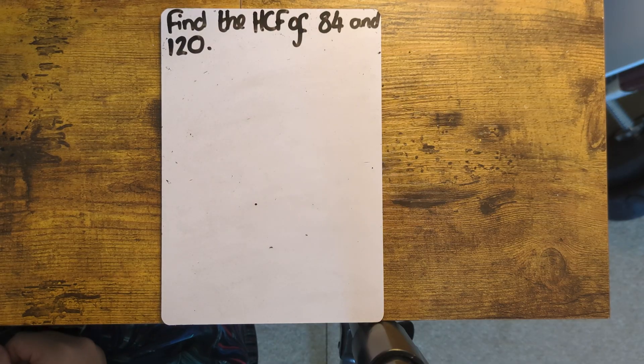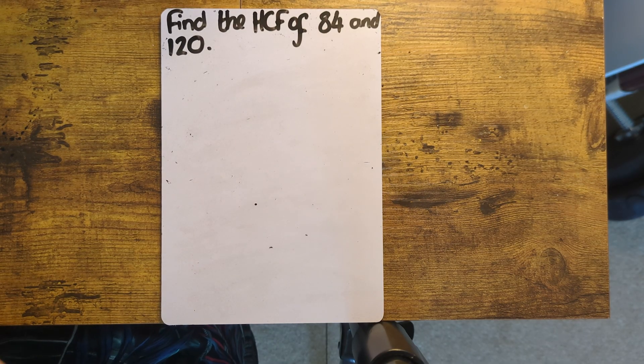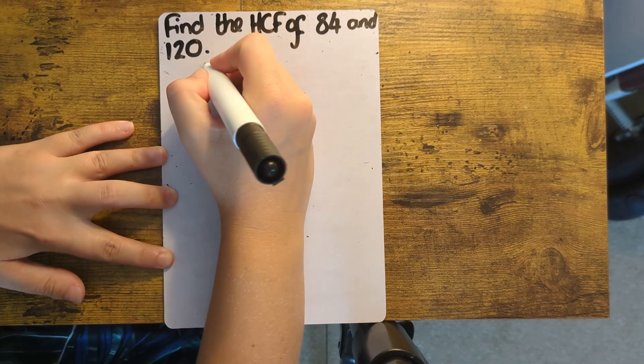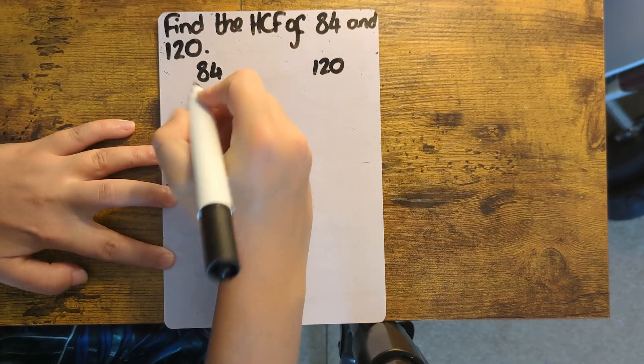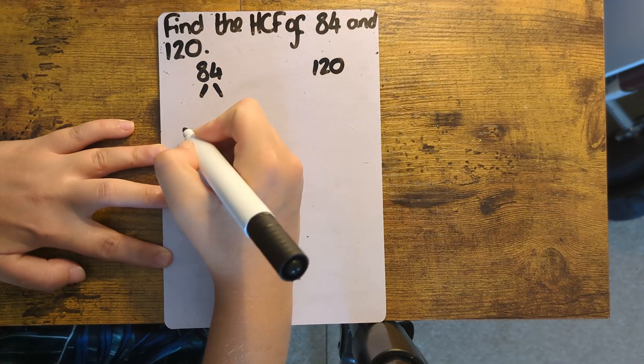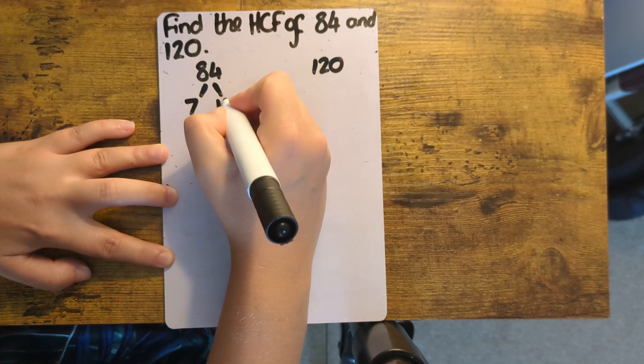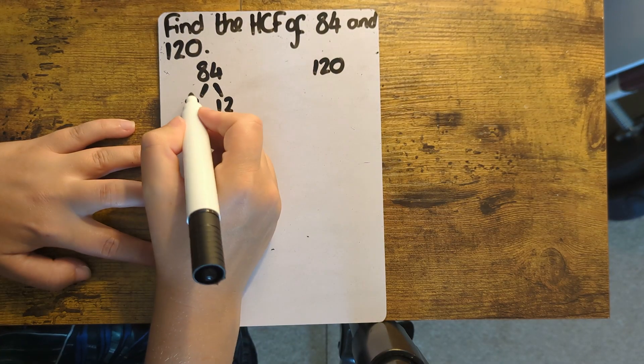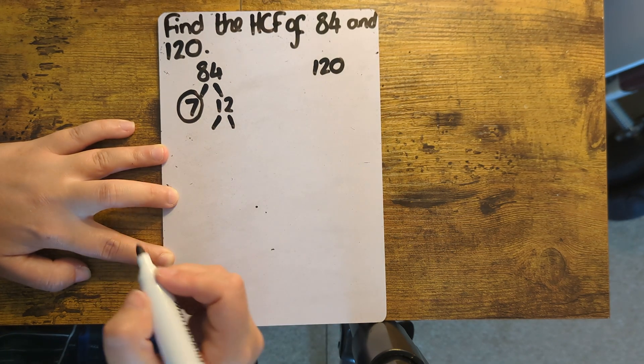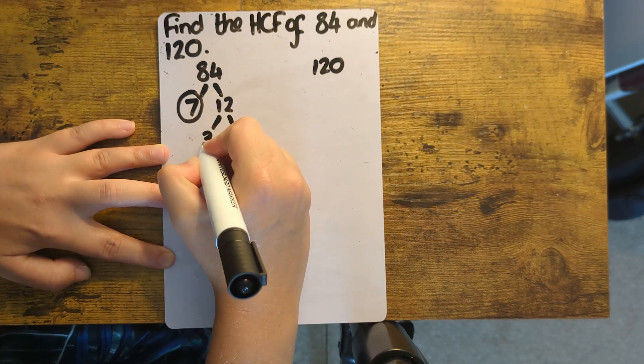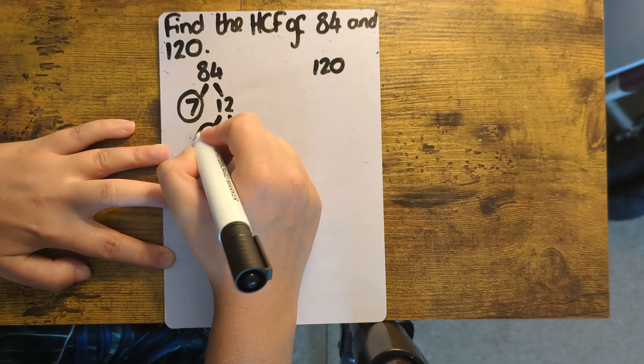For this one, we're finding the highest common factor of 84 and 120. So again, I'm going to do my factor trees for both numbers, and I keep circling each time I write a prime number, and add more branches if a number isn't prime. You will get marks for this stage of the question, so make sure you show your workings.